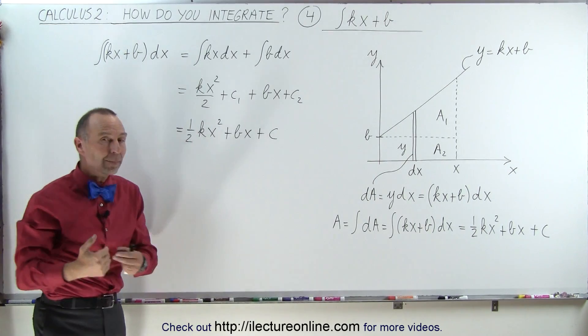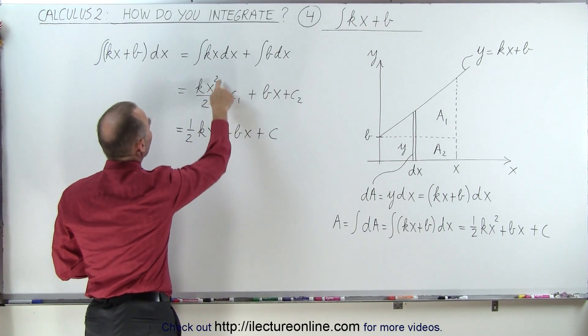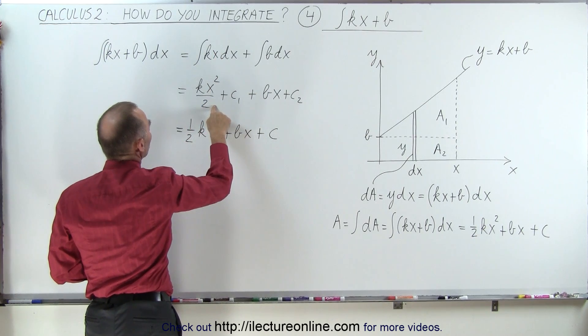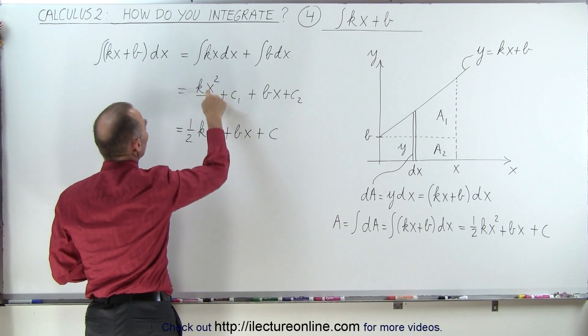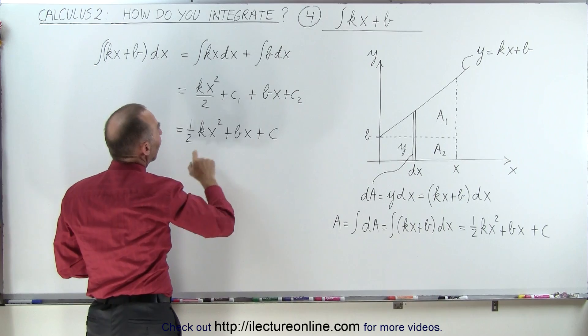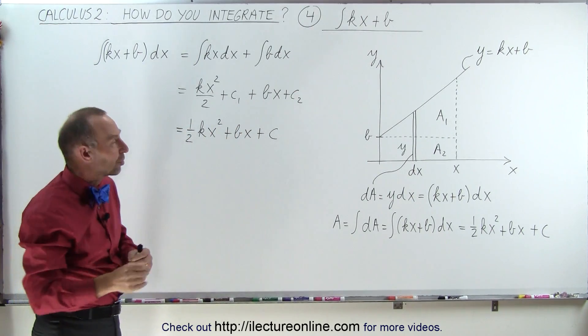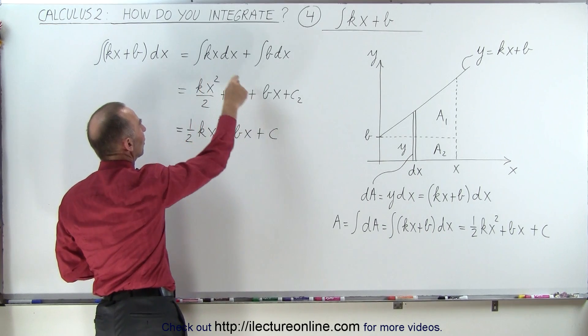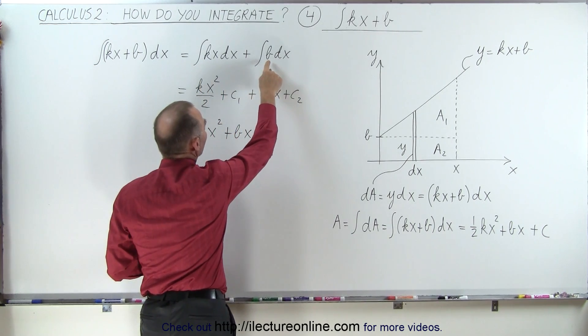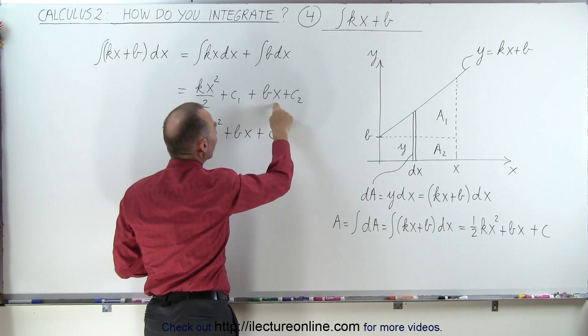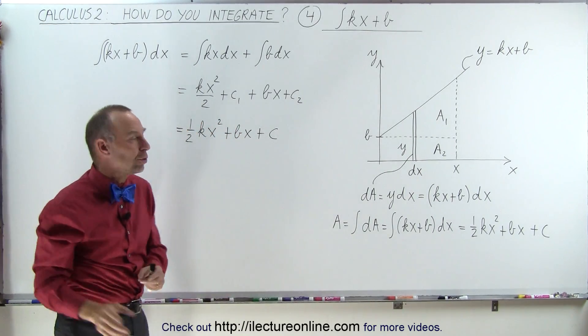Here we use a rule where we add one to the exponent and divide by the exponent, so we end up with one-half kx squared over two. We have to add a constant of integration, let's call that c1, plus when we integrate the constant we get b times x plus another constant of integration, c2.